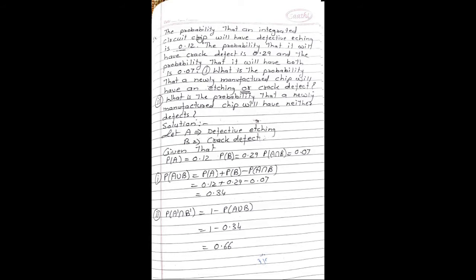Next example. The probability that an integrated circuit chip will have a defective etching is 0.12. The probability that it will have a crack defect is 0.29, and the probability that it will have both is 0.07. What is the probability that a newly manufactured chip will have an etching or crack defect? Second part: what is the probability that a newly manufactured chip will have neither defect?